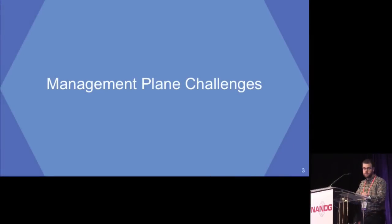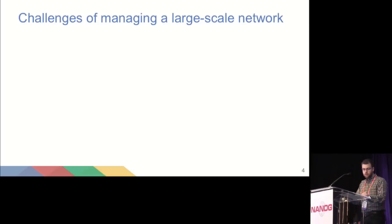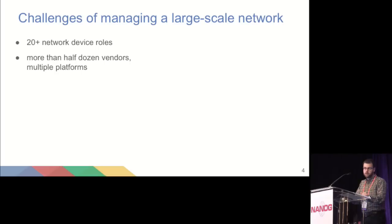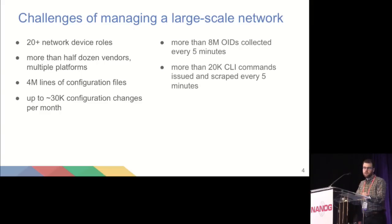What's driving this talk? In our network environment today, some of the challenges we're dealing with: we have 20-plus network device roles, half a dozen vendors, multiple platforms, multiple generations of those platforms in service. Currently we have around 4 million lines of configuration, trending around 30,000 changes per month into the configuration depots. Every five minutes, we collect around 8 million SNMP OIDs and store them, and around 20,000 CLI commands are issued every five minutes across the fleet, and that data is parsed and stored.